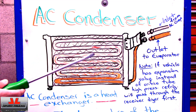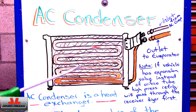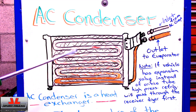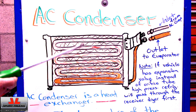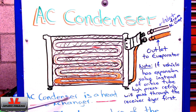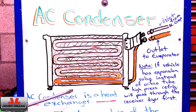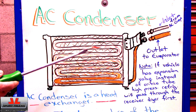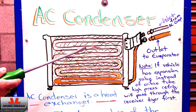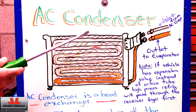Now that we have the camera up close, let's go over the image that I drew. This is the AC condenser. The AC condenser is mounted in the front of your vehicle, in front of the radiator — that's the most common location. The AC condenser is a heat exchanger, just like the evaporator. As you learned in a previous video, the evaporator transferred the heat from the vehicle to the refrigerant. And now the job of the AC condenser is to transfer the heat that has been captured by the refrigerant to the atmosphere.